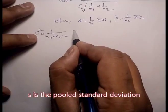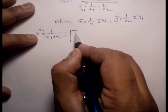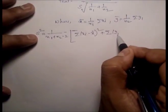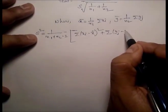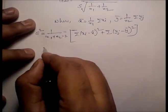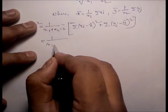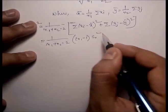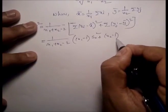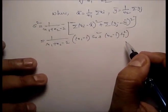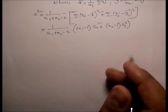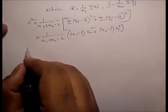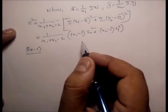To calculate s squared, we use: s squared equals (1/(n1 + n2 - 2)) times [summation of (xi - x_bar)squared plus summation of (yj - y_bar)squared], which can also be written as [(n1-1)s_x squared plus (n2-1)s_y squared] divided by (n1 + n2 - 2). The degree of freedom is n1 plus n2 minus 2.